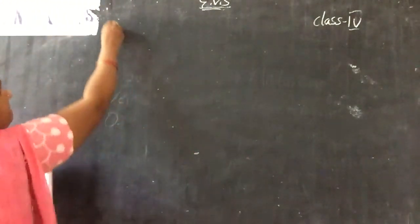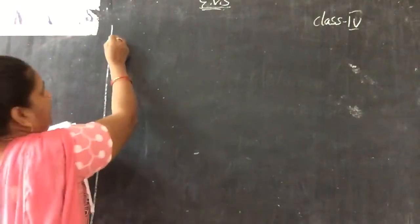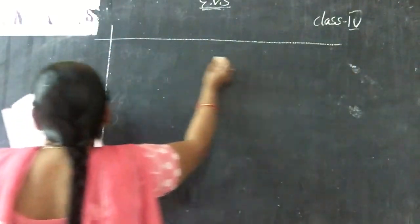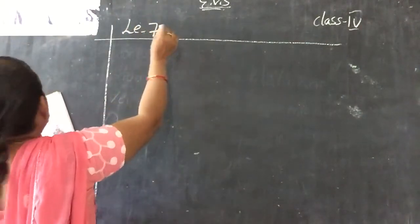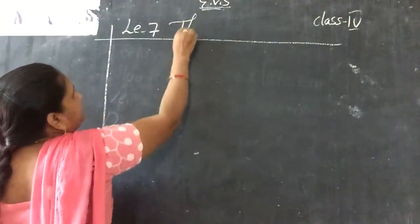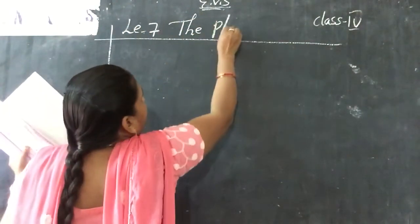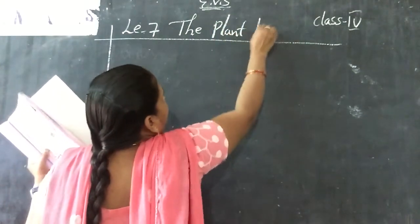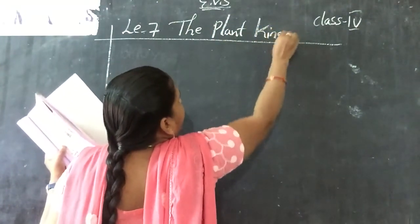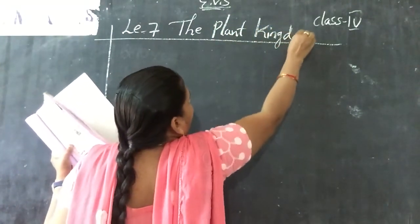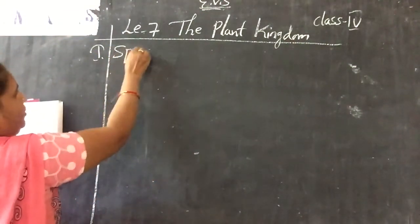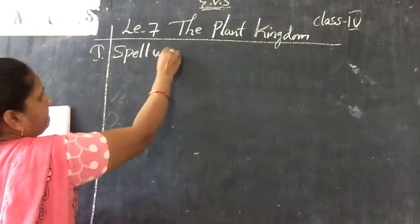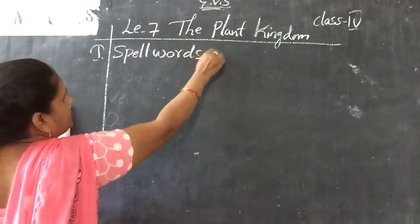Now take out your previous notebook and write lesson number 7 heading on the pink lines: The Plant Kingdom. After writing that, write Roman numeral I, then the heading: Spell Words.